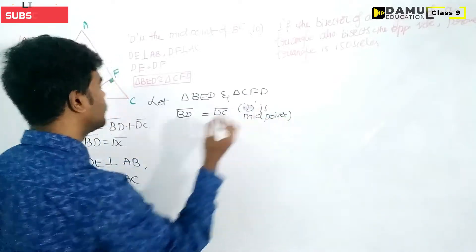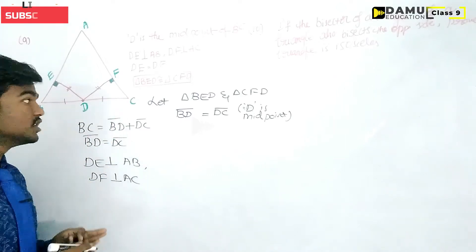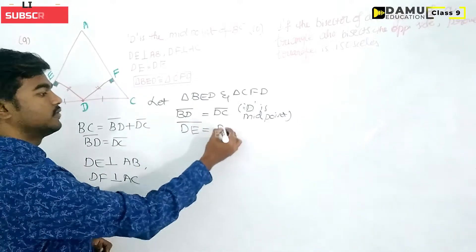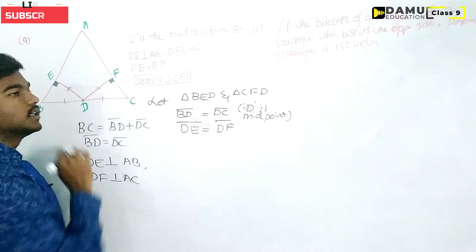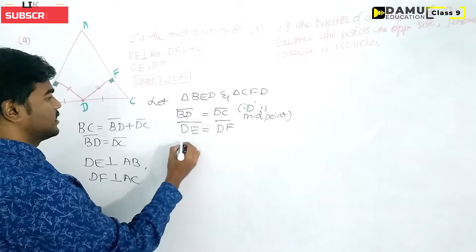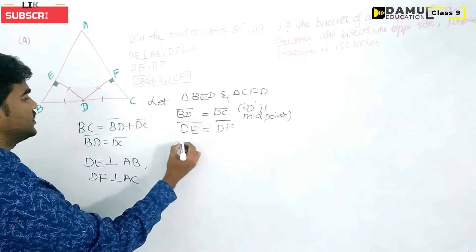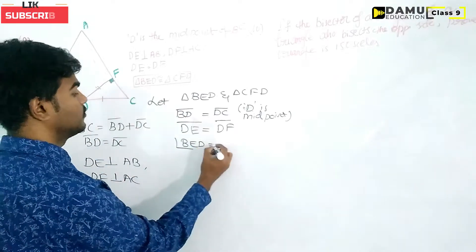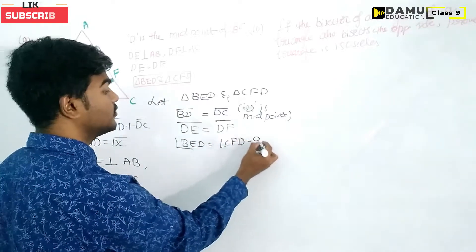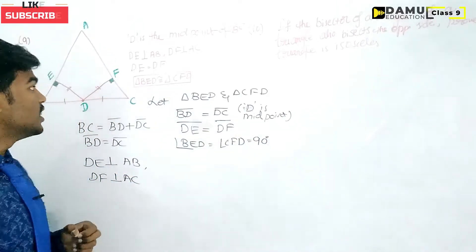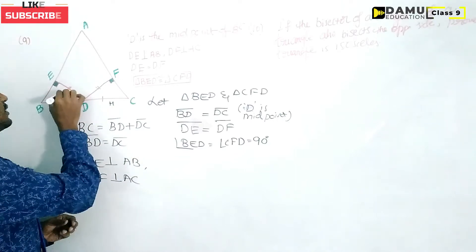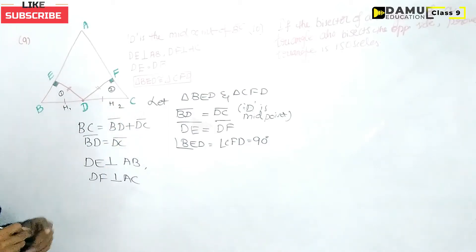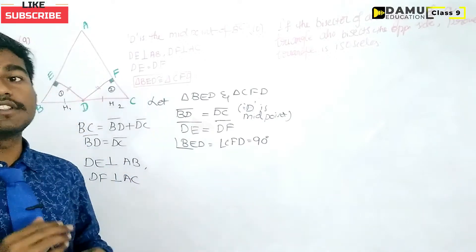Next, DE equals DF as given in the figure. Then, angle BED equals angle CFD, both equal to 90 degrees, since they are right angles. Now we need to identify the hypotenuse in each right-angled triangle. Let us call these H1 and H2 for the two triangles.